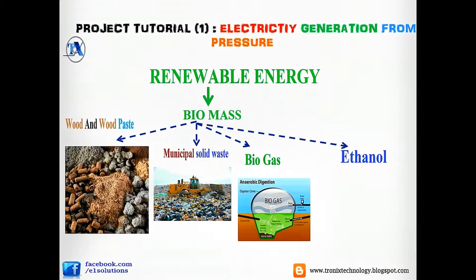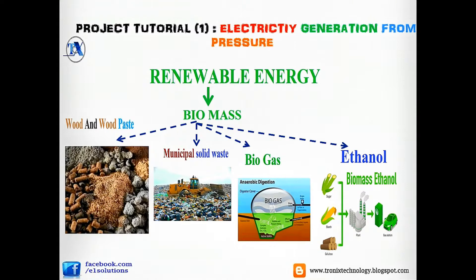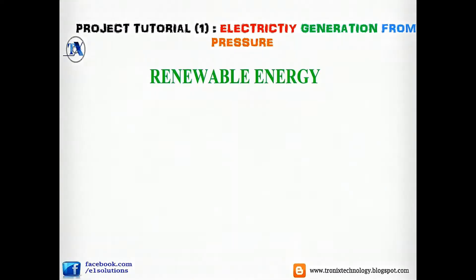Ethanol is a vital fuel made from sugar, starch, and cellulose, which is environmentally friendly. It doesn't produce harmful byproducts like carbon dioxide and carbon monoxide, which are produced from normal petroleum fuels. This biomass ethanol fuel doesn't produce any harmful byproduct.